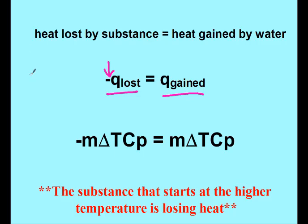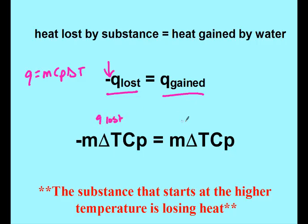From our previous section with specific heat, we said that Q is equal to m·cp·ΔT. So since our Q's are equal to each other, we can say negative m·ΔT·cp is equal to m·ΔT·cp. This one is the one that's losing heat, and this is the one that's gaining the heat.